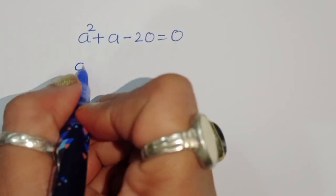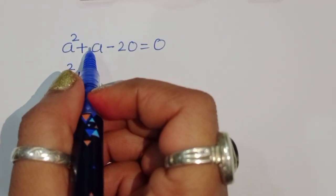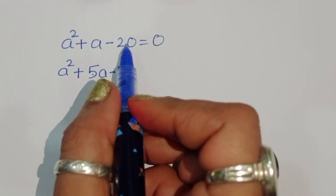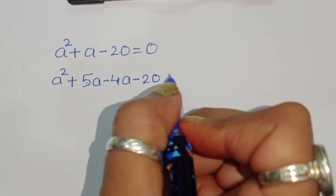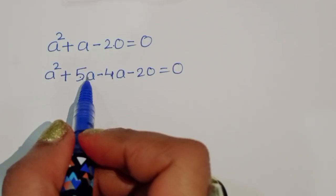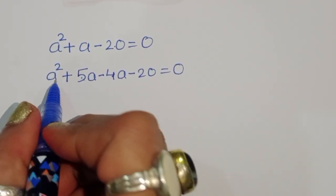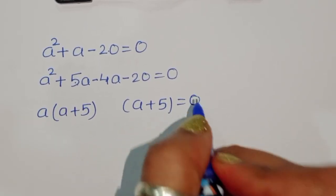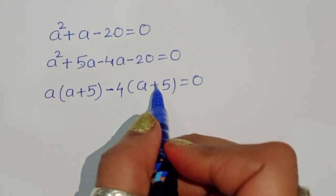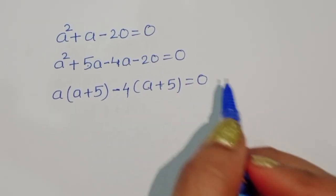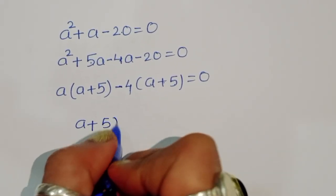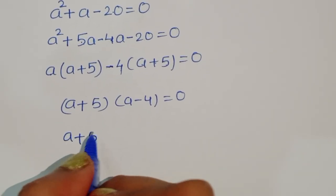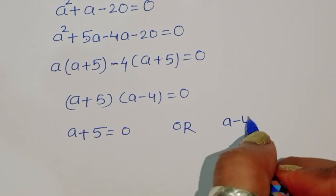Now we solve the quadratic equation a² + a - 20 = 0. We split the middle term as +5a - 4a, giving a² + 5a - 4a - 20 = 0. Taking common factors: a(a + 5) - 4(a + 5) = 0, so (a + 5)(a - 4) = 0.